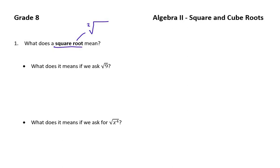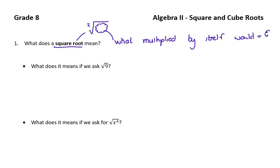So what does a square root mean? It means whatever is under the square root, you're asking yourself: what multiplied by itself would give me that value? A square root means what multiplied by itself — an identical self — would equal whatever is under the square root. This is why a square root is like an exponent — it's the same type of logic, and when you get to grade 11, you'll see that link very clearly.